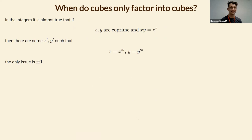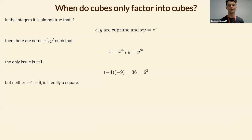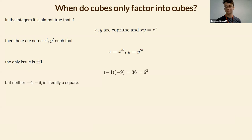In the integers, it's almost true that if a product of two coprime things is an nth power, then each is an nth power. The only issue is the presence of plus or minus one — for example, minus four times minus nine is 36, which is six squared, but minus four and minus nine aren't literally squares. This is the issue of the unit group, which we'll mostly ignore. We want to know when this holds in more general rings, in particular number rings or number fields.